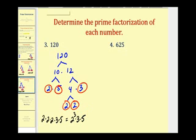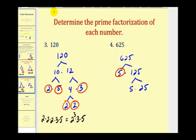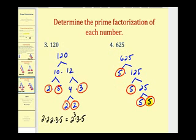Let's go ahead and try one more. Six hundred twenty-five ends in a five and therefore is divisible by five. So we'll start by breaking this down into five times one hundred twenty-five — five is prime. One hundred twenty-five also ends in a five so it's divisible by five: five times twenty-five. Five is prime, and then twenty-five is five times five. So the prime factorization of six hundred twenty-five consists of four factors of five, which would be five to the power of four.